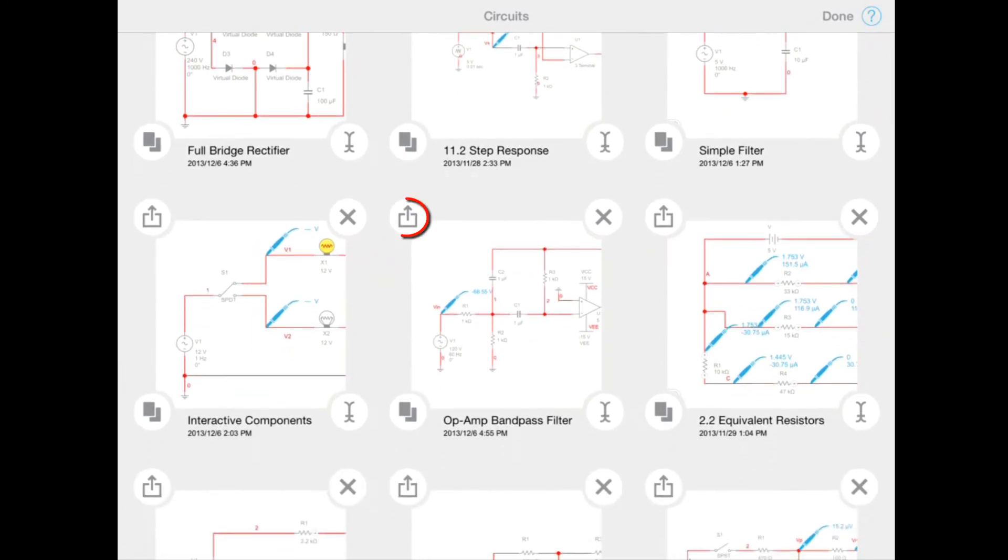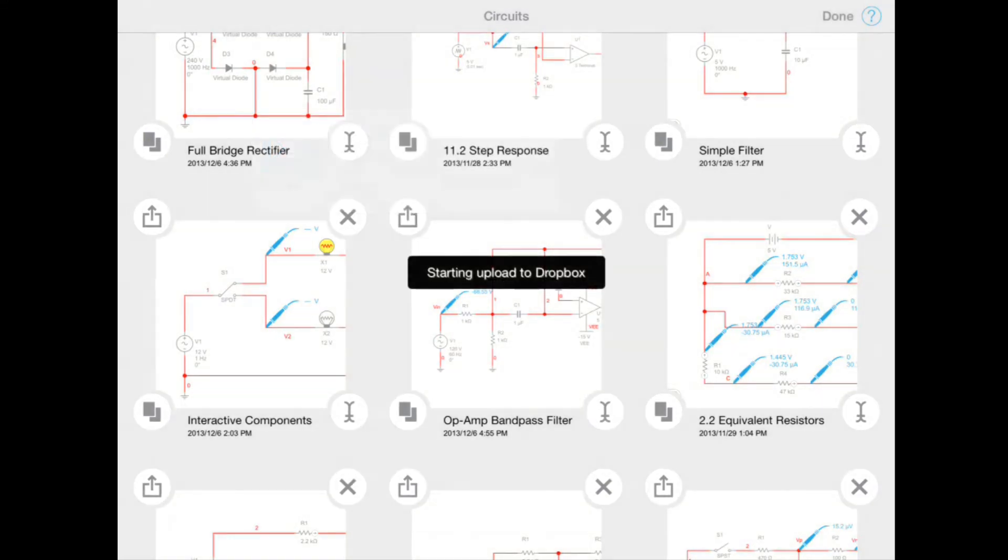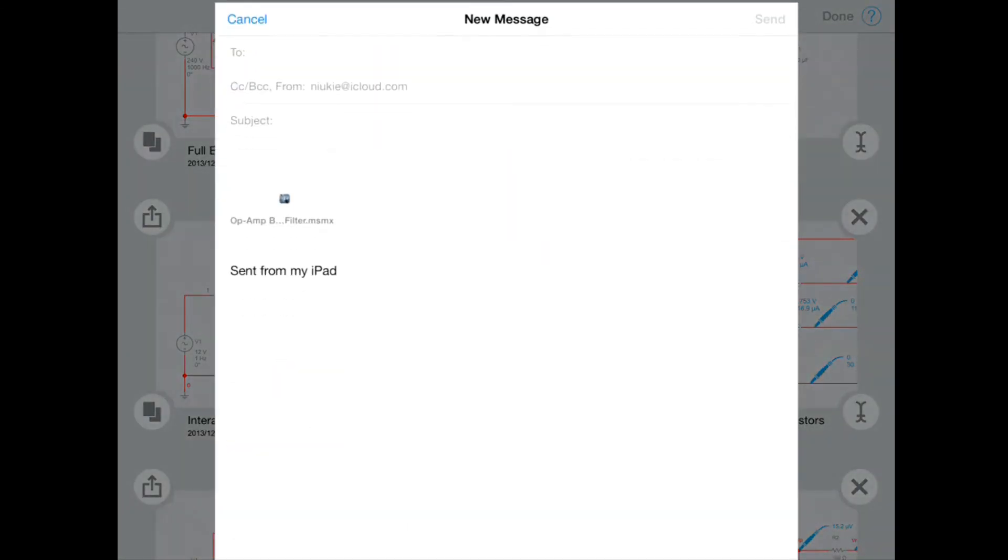The final button we have here is the export button. And that gives us two options. We can upload via Dropbox to our connected Dropbox account, or we can email our circuit to another user of MultiSim Touch.